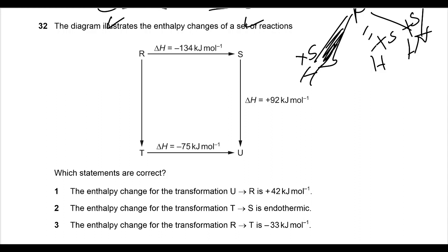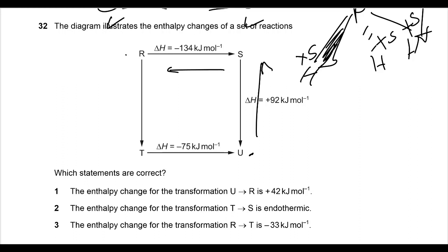Question 32: the diagram illustrates enthalpy changes for a set of reactions — R to S, S to U, and T to U or R to T. Statement one: the enthalpy change for the transformation U to R. Since S to U is endothermic, U to S should be exothermic, so negative 42. And since R to S is exothermic, S to R should be endothermic, so positive 134. That gives 134 minus 42, making this statement correct.